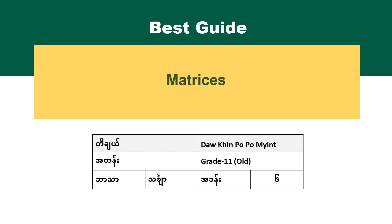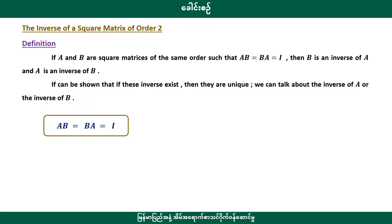Hello everyone! First of all, let's talk about the inverse of the square matrix of order 2. The square matrix of order 2 is defined such that if A and B are square matrices of the same order, the square matrix of order 2 is the inverse of A.